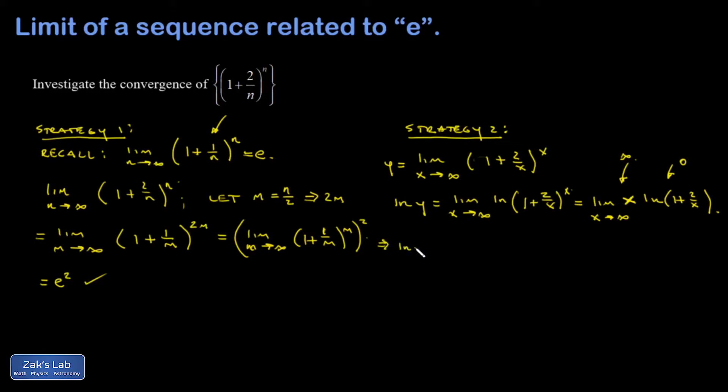So next line, natural log of y is equal to the limit as x goes to infinity. And I'm going to try to build a fraction that gives me an indeterminate form. And then I'm allowed to use L'Hopital. So I'm going to say, instead of putting an x here, I'm going to put a 1 over x in the denominator. And as x becomes large, natural log 1 plus 2 over x is getting close to natural log 1, which is a 0. And then the denominator, 1 over x, that's getting close to 0. So now I can use L'Hopital.